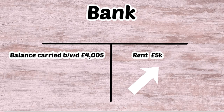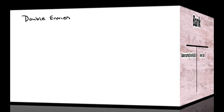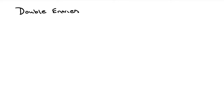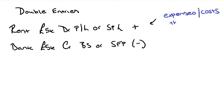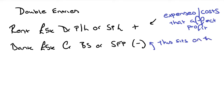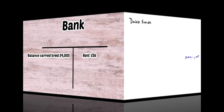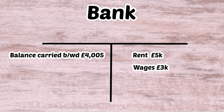If we introduce a rent payment of £5,000 in the year, that sits on the right hand side of the T account. The double entry is: debit rent in the statement of profit and loss and credit bank £5,000. The £5,000 reduces what we have on the balance sheet and rent increases costs in the profit and loss, thereby reducing our overall profit in the income statement.